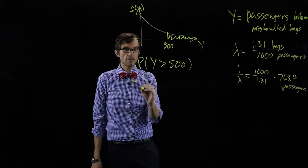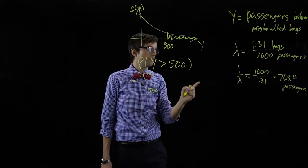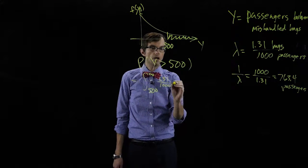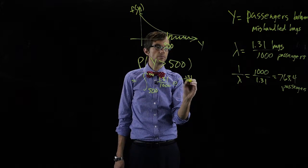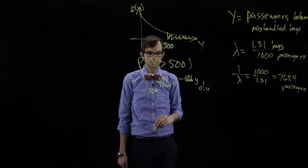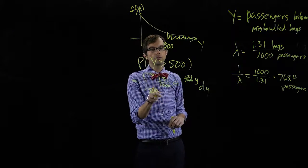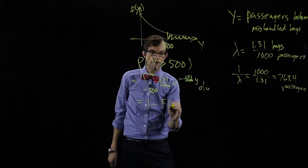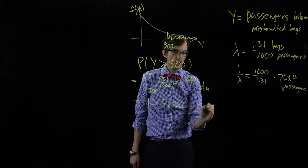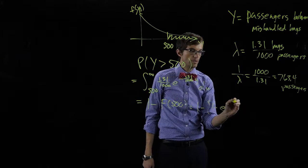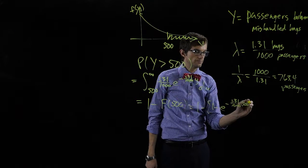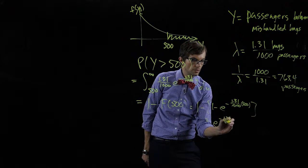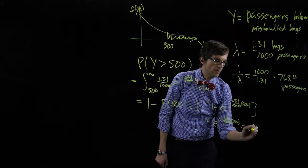We can take the integral from 500 to infinity of our PDF, which is lambda = 1.31 over 1000 times e to the minus 1.31 over 1000 times y, dy. This is also equivalent to the complement of the cumulative probability evaluated at 500. That would be 1 minus e to the minus 1.31 over 1000 times 500. The ones cancel, leaving just e to the minus 1.31 over 1000 times 500, which works out to 0.5194.